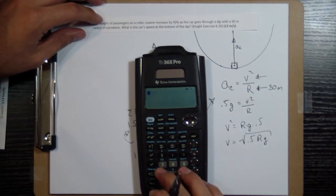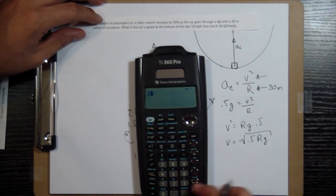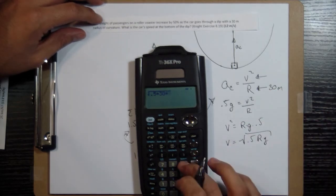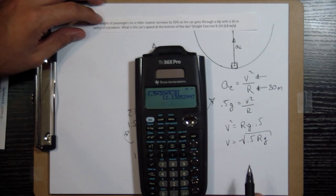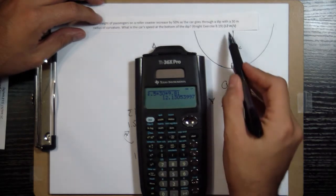And we've got a number for that. Square root 0.5 times R, which is 30, times g, which I can put as 9.81. I get 12.13 rounds to 12.